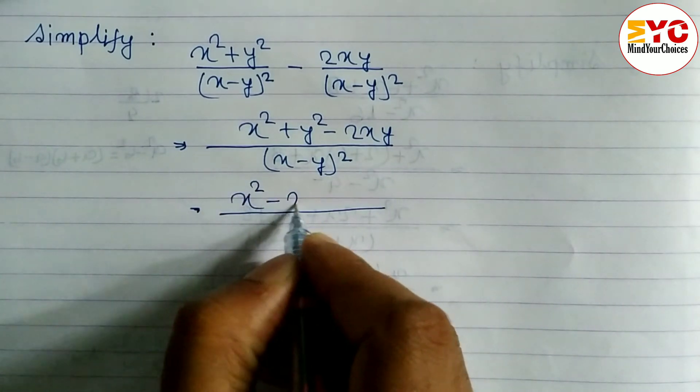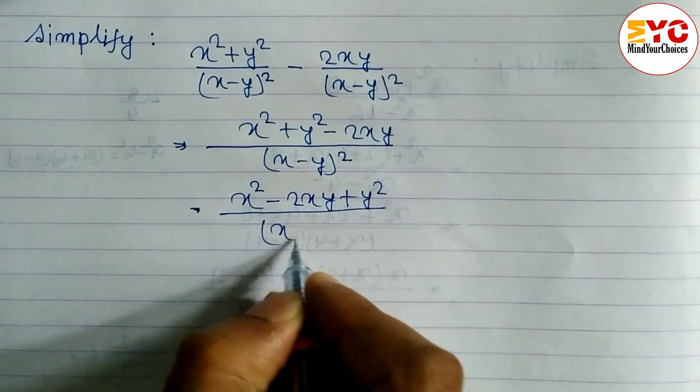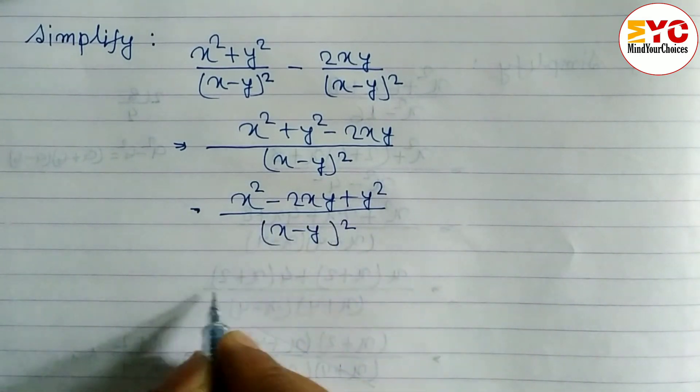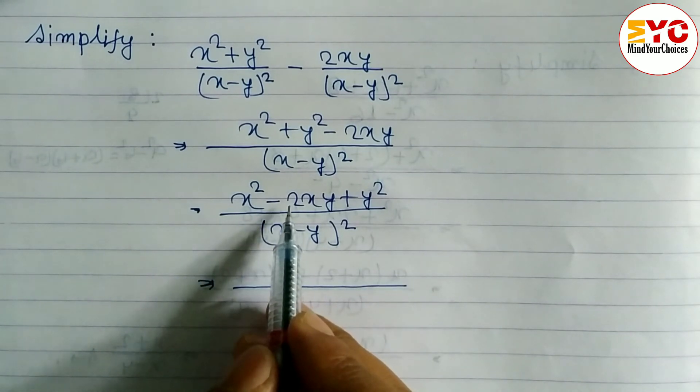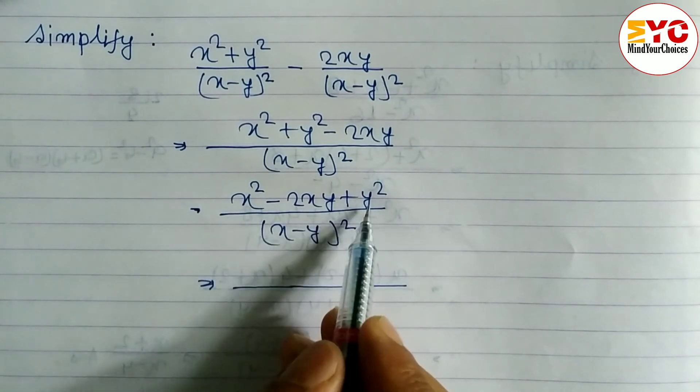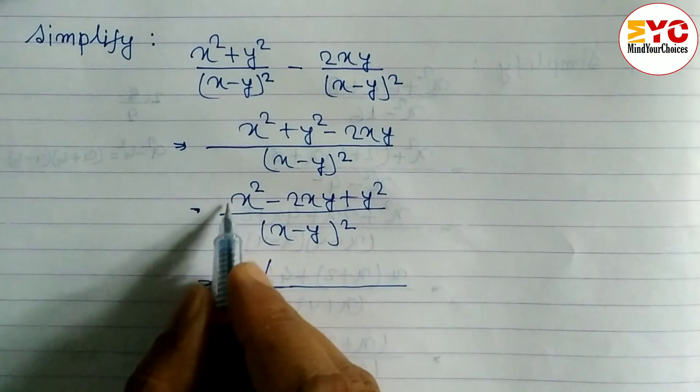Now you can see in numerator, this is in the form of formula a squared minus 2ab plus b squared. So what we can write here: a minus b whole squared. In the place of a, what is here? x. So we can write here x minus, in the place of b what is here? y.